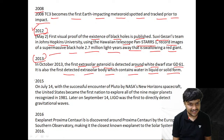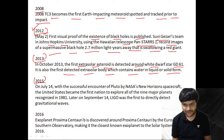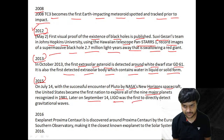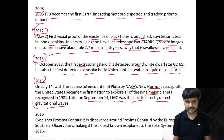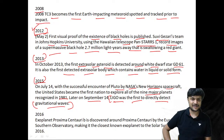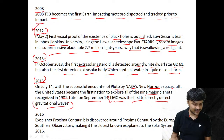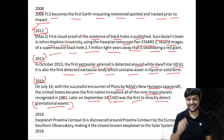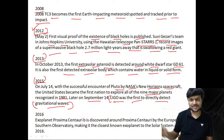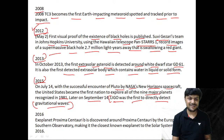In 2015, NASA's New Horizons spacecraft successfully encounters Pluto, making the United States the first nation to explore all nine major planets recognized in 1981. Later in September 2015, LIGO makes the first direct detection of gravitational waves — one of the greatest discoveries of the era. After years of theorizing, gravitational waves were finally detected through the LIGO collaboration.